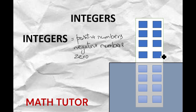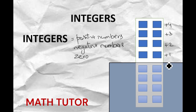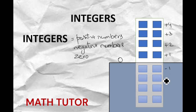Let us take this building. This is the first floor, second floor, third floor, and fourth floor. This is the plane on which the building stands — that is nothing but the origin, or 0. And this is the water, the reflection of the building in the water: minus 1, minus 2, minus 3, and minus 4.